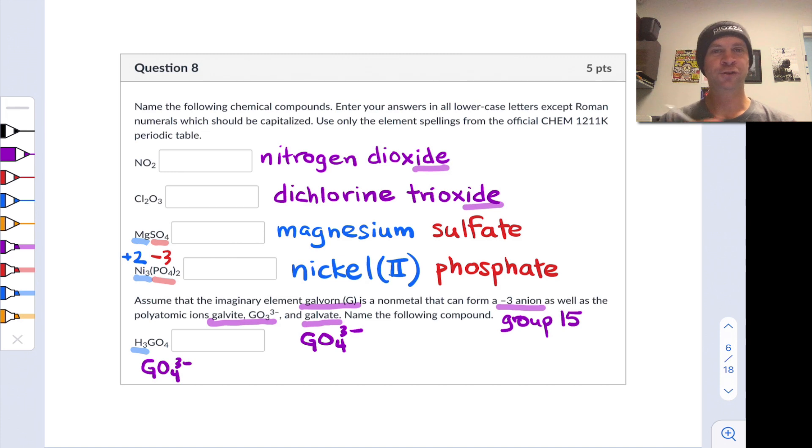And you know what? We just figured out how to name GO4^3-. That's Galvate. And so now the question becomes, how do we go from the name of this oxyanion to the name of the corresponding neutral acid? Well, by convention, we're going to replace that ate with ic acid.